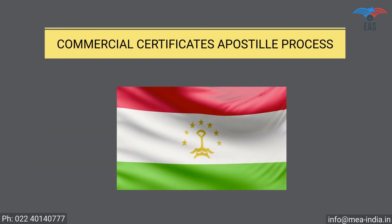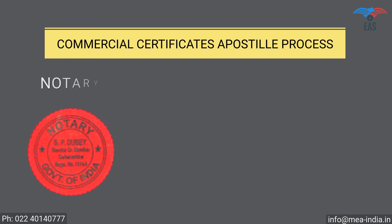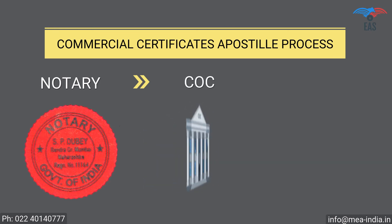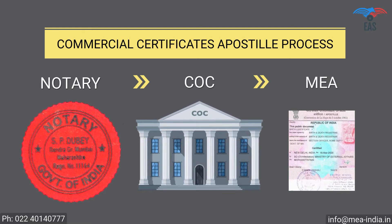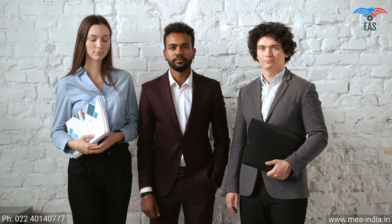Commercial Documents Apostille Procedure for Tajikistan — Step 1: Notary Attestation. Step 2: Attestation from Chamber of Commerce. Step 3: Final Attestation from the Ministry of External Affairs. Since this process involves your original documents, there is always a concern of document security and handling. So it is beneficial to get certificates attested from experts. Excellent Apostille Services guarantees the highest reliability and quality, and provides end-to-end services of apostille or translation.